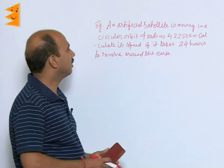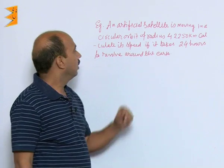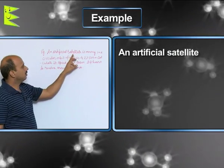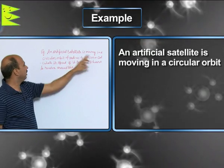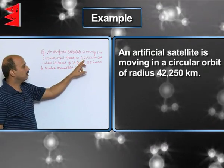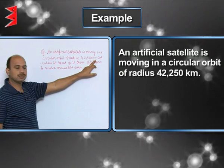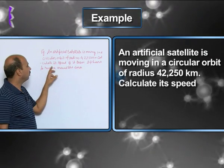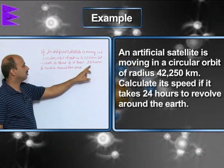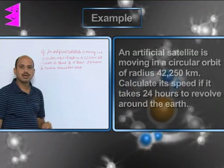Now, we will take an example of circular motion. Say an artificial satellite is moving in a circular orbit of radius 42,250 kilometers. Calculate its speed if it takes 24 hours to revolve around the earth.